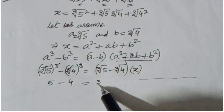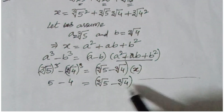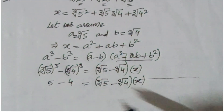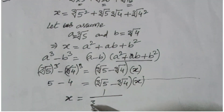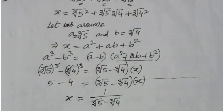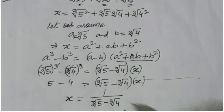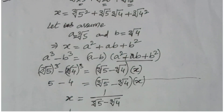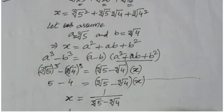Therefore x is equal to 1 over (cube root of 5 minus cube root of 4), which means 1 over x equals cube root of 5 minus cube root of 4.